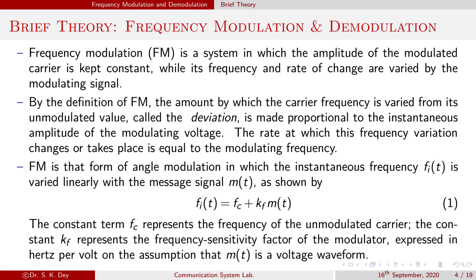Now I'll discuss a little bit about the theory of frequency modulation and demodulation. Frequency modulation is a system in which the amplitude of the modulated carrier is kept constant while the frequency and rate of change are varied by the modulating signal. The amount by which the carrier frequency is varied from its unmodulated value is called deviation. The deviation is made proportional to the instantaneous amplitude of the modulated voltage.